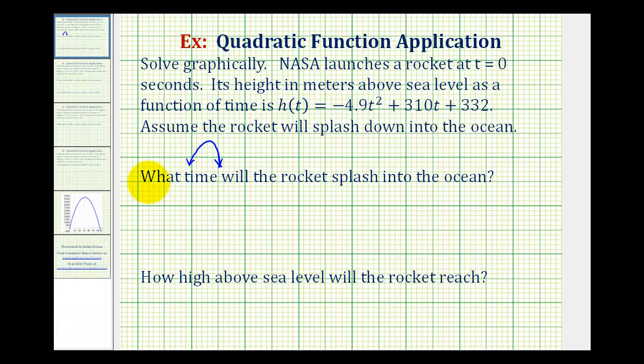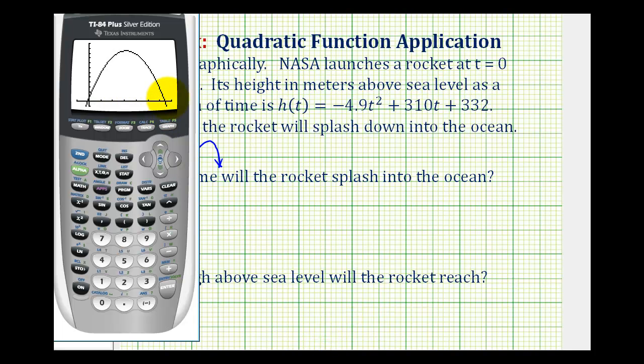So for this first question, what time will the rocket splash into the ocean? We actually want to find the x value or t value, which would be this intercept here. So on the calculator, we're going to press second trace. And then the x intercepts are the zeros, so we're going to press number two. Now it's asking us for the left bound and right bound. So we're going to move this cursor very close to this x intercept, but just to the left of it, which in this case would be above it. Maybe somewhere in here, we'll press enter.